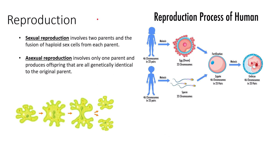Reproduction is the ability to produce viable offspring. Sexual reproduction and asexual reproduction are two forms seen in living things. Sexual reproduction involves two parents and the fusion of haploid sex cells from each parent. Asexual reproduction involves only one parent and produces offspring genetically identical to the original parent. Unicellular organisms typically undergo asexual reproduction through binary fission. Some multicellular organisms can also reproduce asexually through budding and fragmentation, producing exact clone copies. Humans reproduce sexually, with haploid gametes fusing to produce a zygote and ultimately an embryo.